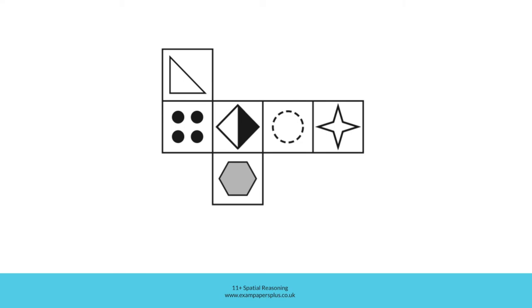When working on these kinds of questions, it's useful to try to visualise folding the net to make a cube. Think about where you would fold the net. We know that edges will form fold lines. You can also think about choosing one of the faces and thinking about that face being uppermost on the cube. Then decide which of the faces would be next to it.